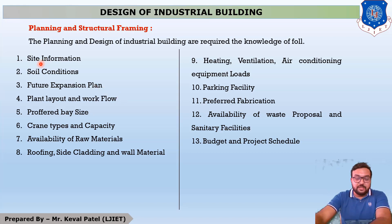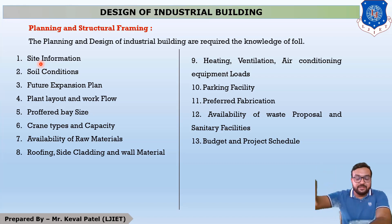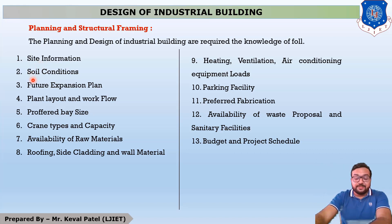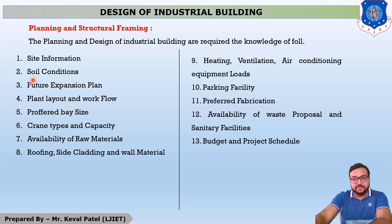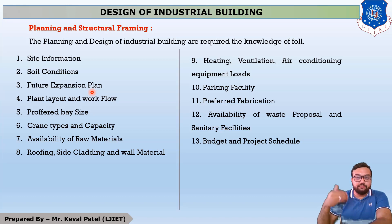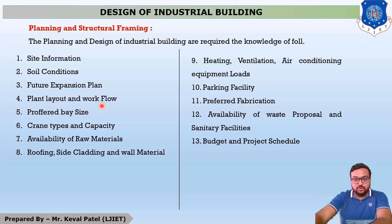First is Site Information — in which area and at which location the industrial building is to be made, what is the peripheral residential area, size of peripheral buildings, and peripheral industrial size. Next is Soil Condition, because whenever we design for pedestal footing, soil condition and soil bearing capacity are most important. Next is Future Expansion Plans — if the owner plans for future expansion, you must design the industrial building with a higher factor of safety. Next is Plant Layout and Workflow — how long it takes to complete the industrial building.